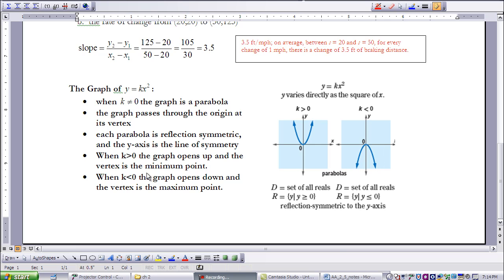When it opens upward, the vertex is our minimum value or minimum point, and when it opens downward, our vertex is our maximum point.